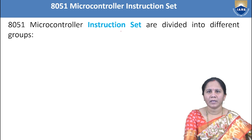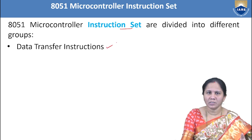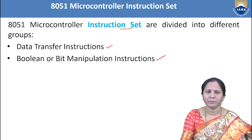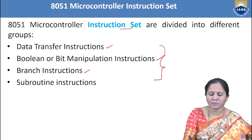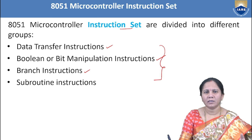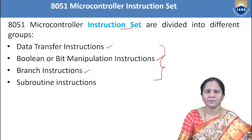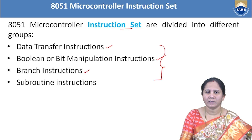The 8051 microcontroller has different instruction classifications: data transfer instructions, bit manipulation instructions (also called Boolean instructions), and branching instructions. We have already discussed data transfer instructions like MOV, MOVC, MOVX, PUSH, and POP, bit manipulation instructions for setting and clearing bits, and conditional and unconditional branch instructions in the previous session.